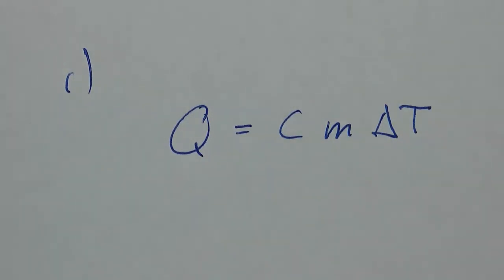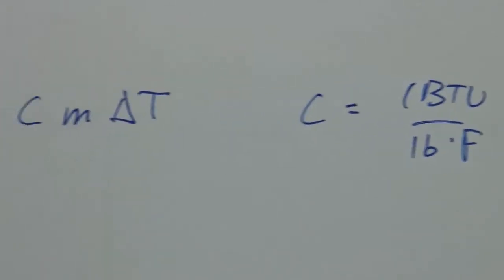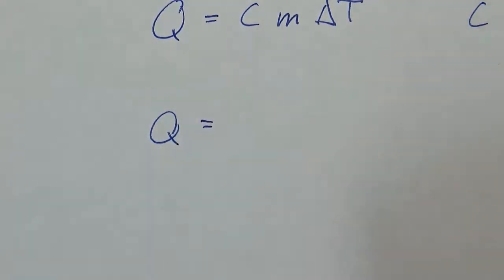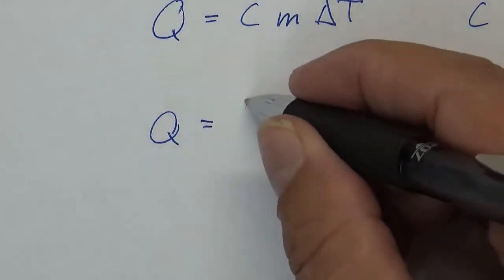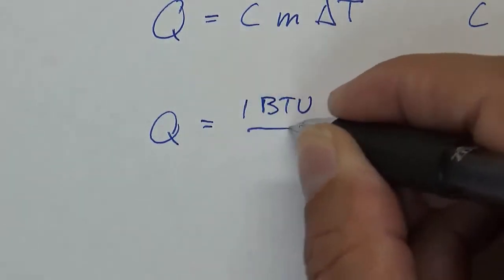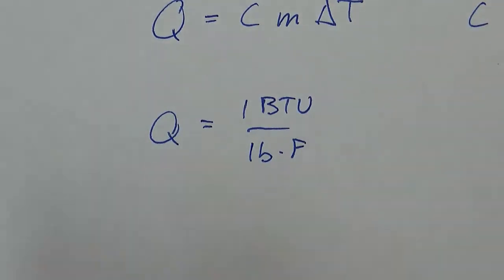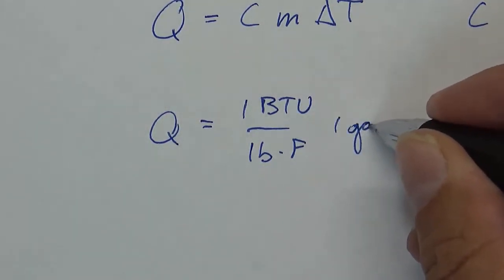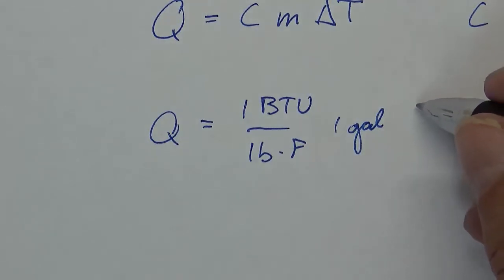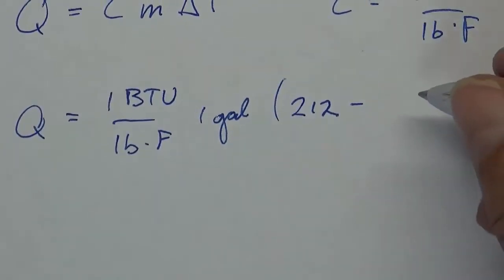Now for water, C equals 1 BTU per pound per degree F. So here's C, and I'm just going to go ahead and put M in here as gallons, even though it needs to be in pounds. So here's C, 1 BTU per pound per degree F, and they want one gallon, so I'm just going to write a gallon in there, and then delta T. Well, the final temperature is 212 and the initial temperature is 72, and that's going to have units of Fahrenheit.